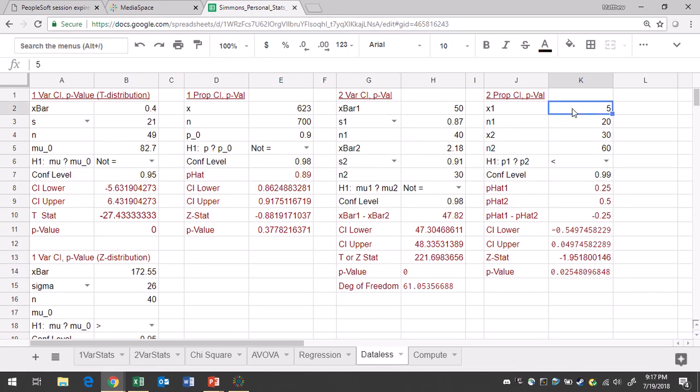Group 1 type in the successes and the sample size so 165 out of 260. Do the same for group 2, 108 out of 270.